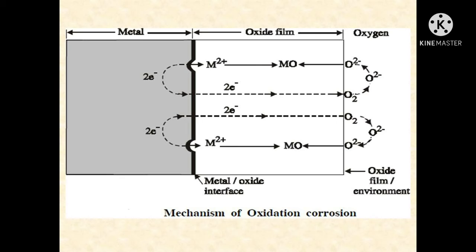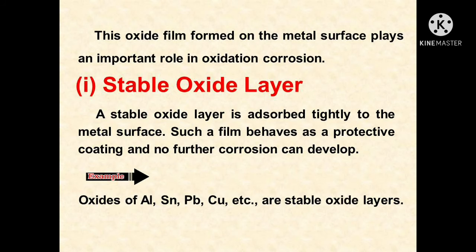Once the metal surface is converted to a monolayer of metal oxide, for further corrosion to occur, the metal ion diffuses outwards through the metal oxide barrier. The growth of the oxide film commences perpendicular to the metal surface. This oxide film formed on the metal surface plays an important role in oxidation corrosion.